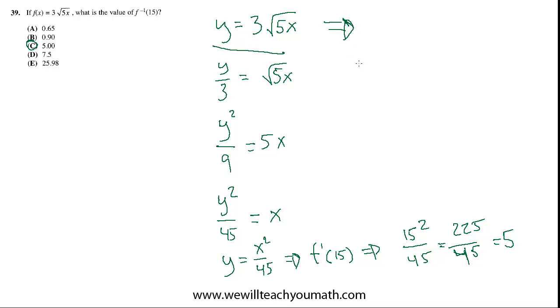So if we wanted to go after it that way, we'd let y equal 15, and then that still equals 3 times root 5x, and now we have to solve for x. So we can kind of go through the same process. Divide by 3. 15 over 3 is 5, equals root 5x.